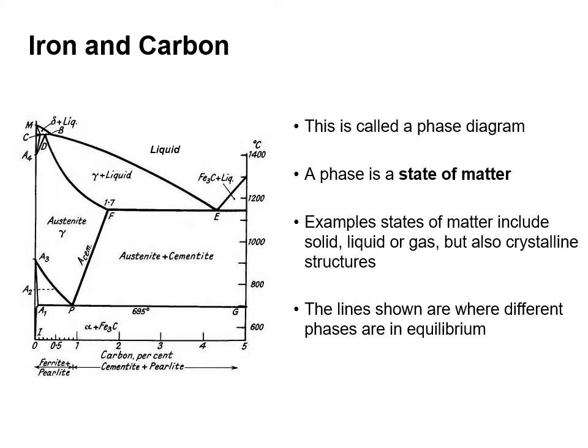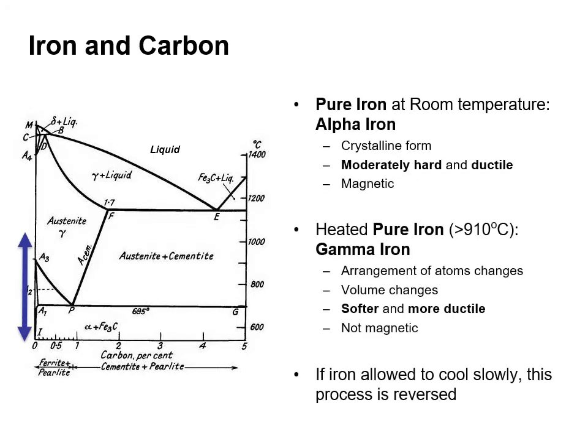The diagram shown is what's called a phase diagram. A phase is a state of matter — examples include solid, liquid or gas, but also crystalline structures. The lines shown are where the different phases are in equilibrium. Pure iron at room temperature is known as alpha iron. It's in a crystalline form, moderately hard and ductile, and also magnetic.